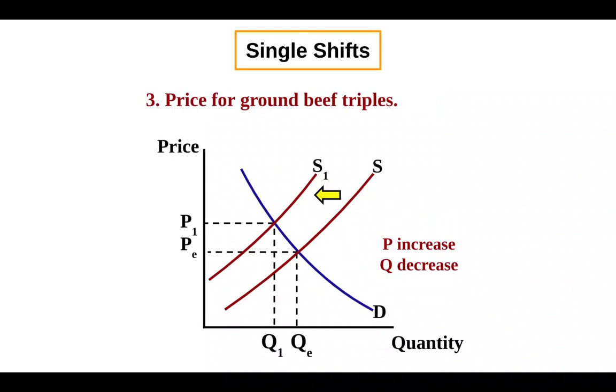Finally, our third example is going to be the price for ground beef, which is an input used to make hamburgers, triples. And so now that hamburgers are more costly to produce, the price rises and the quantity falls due to a supply shift to the left, okay? So remember that when we say to the left, that means less, to the right, more. And make sure your arrows are indicating that by pointing left or right.